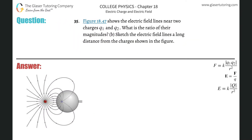Number 35. Figure 18.47 shows the electric field lines. There are two charges, Q1 and Q2. What is the ratio of their magnitudes? The ratio of the magnitudes is basically equal to the ratio between the number of lines around each charge.